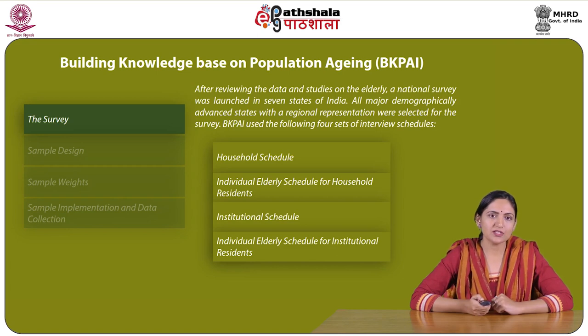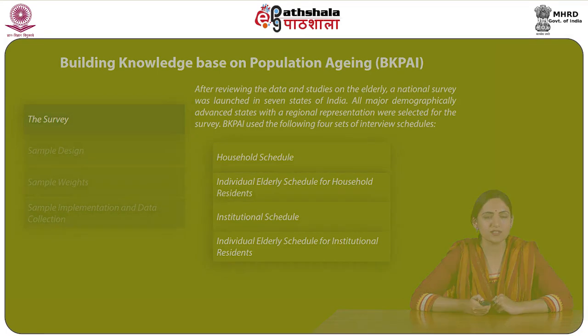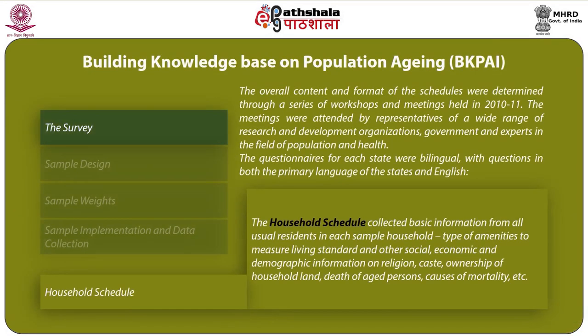The four major schedules include: household schedule; individual elderly schedule for household residence; institutional schedule; and individual elderly schedule for institutional residence. The overall content and format of the schedules were determined through a series of workshops and meetings held in 2010–11, attended by representatives of a wide range of research and development organizations, government and experts in the field of population and health.